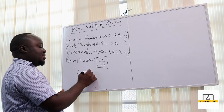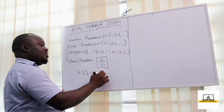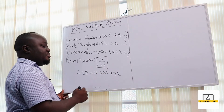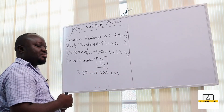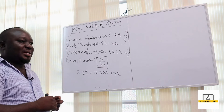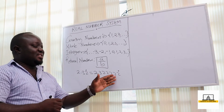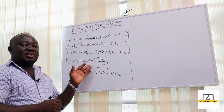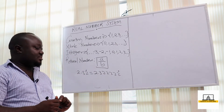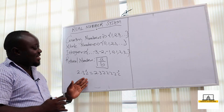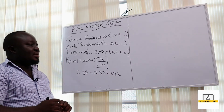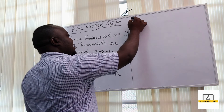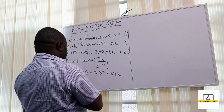For example, if I have a number like 2.32 with 2 recurring, this is the same as 2.3222... The recurring 2 means this is a rational number — even though it goes to infinity, it can be expressed as a fraction and it has an end with repeating values.